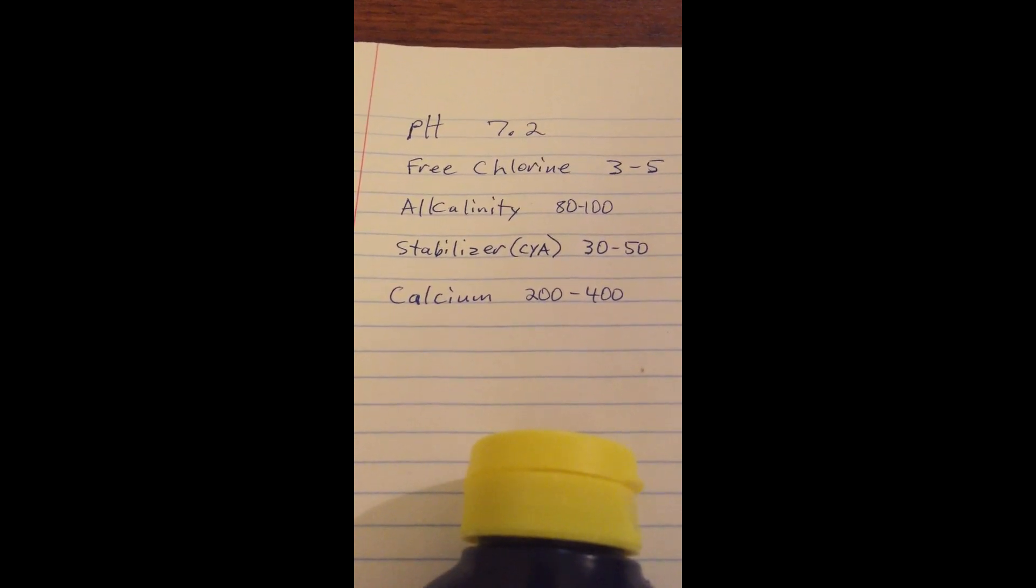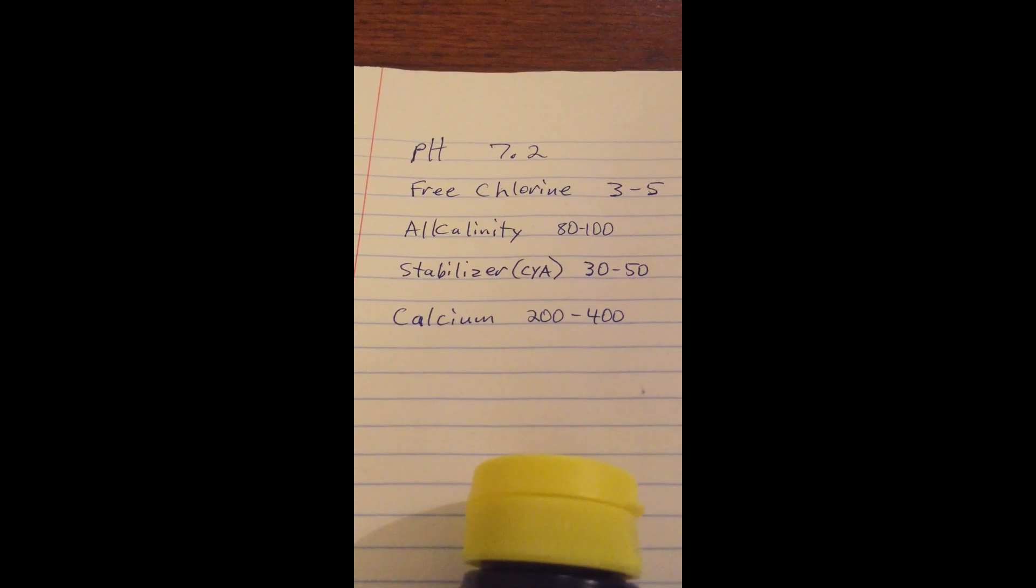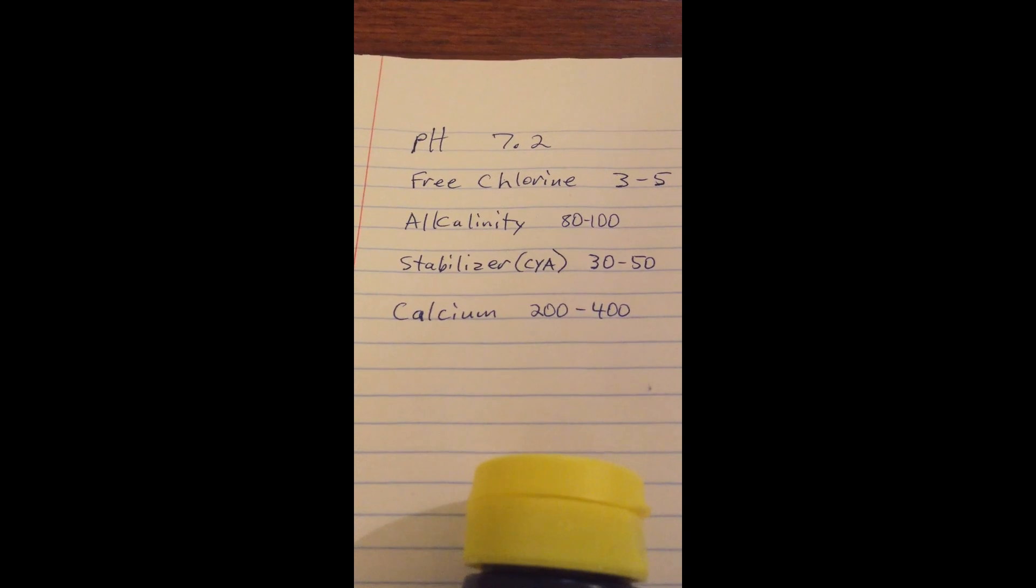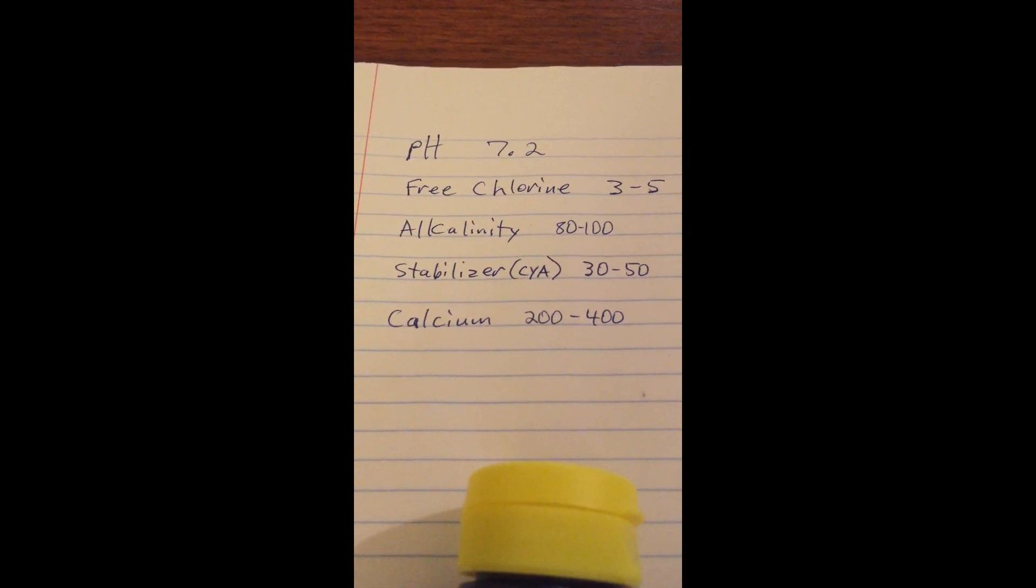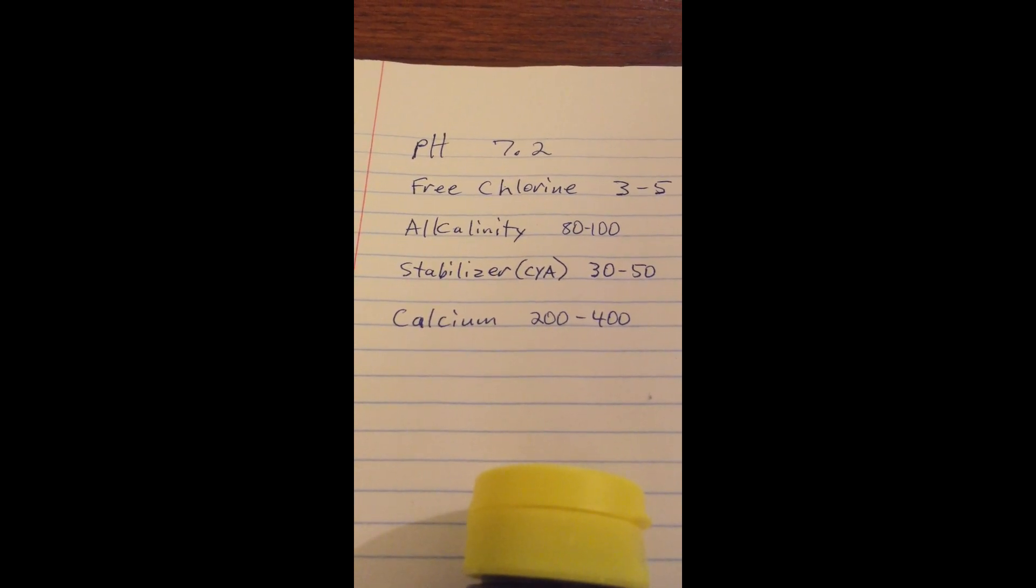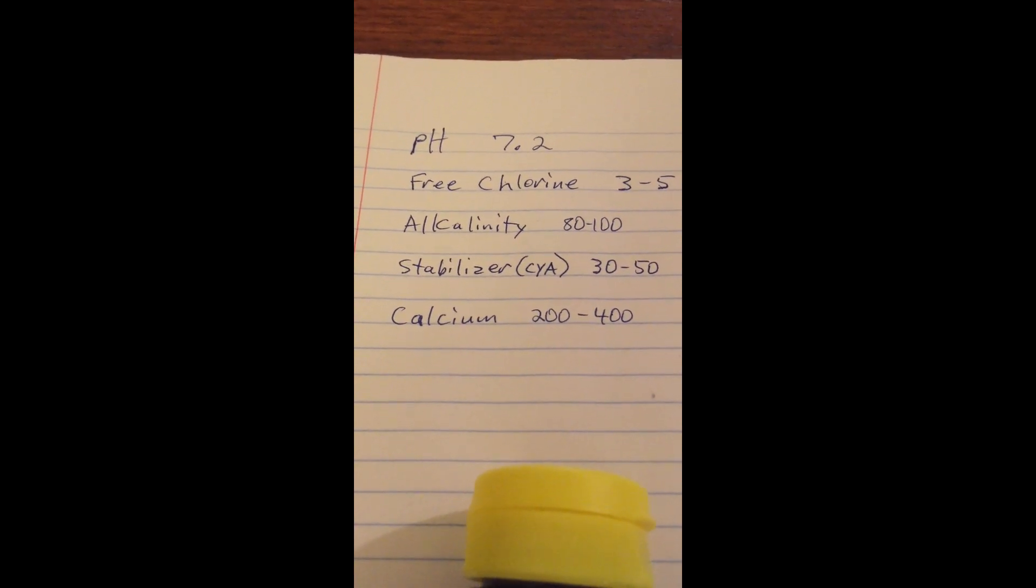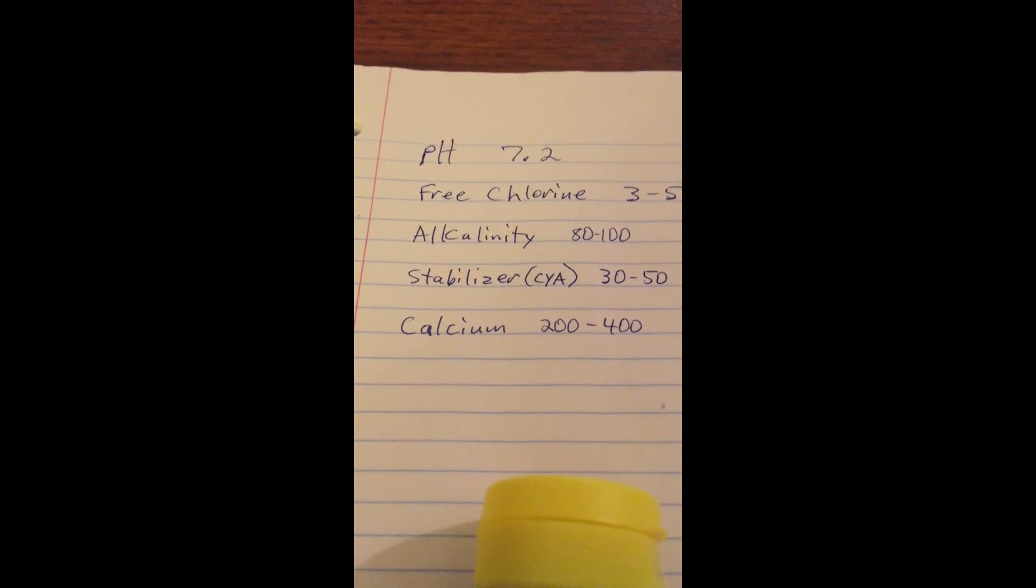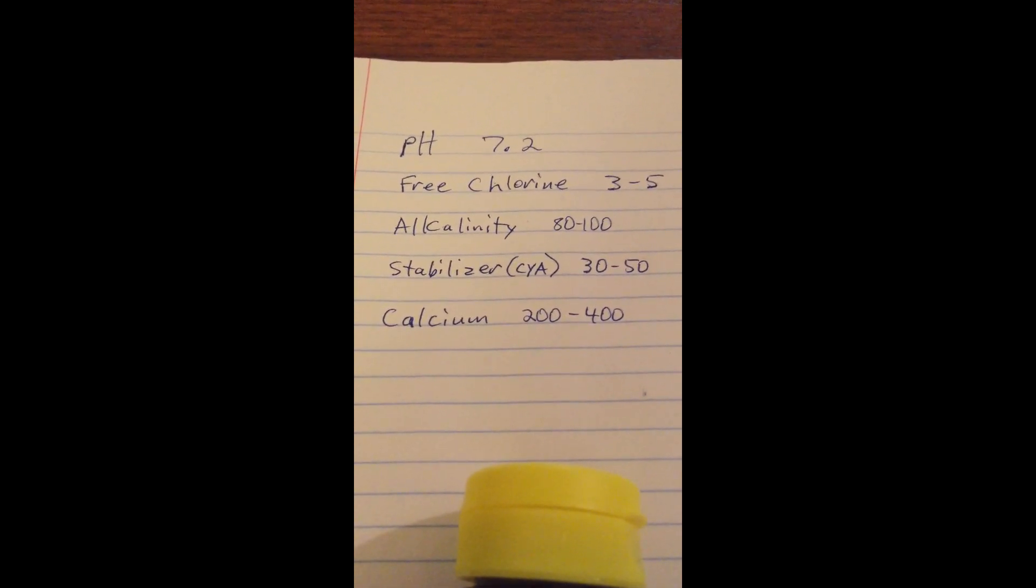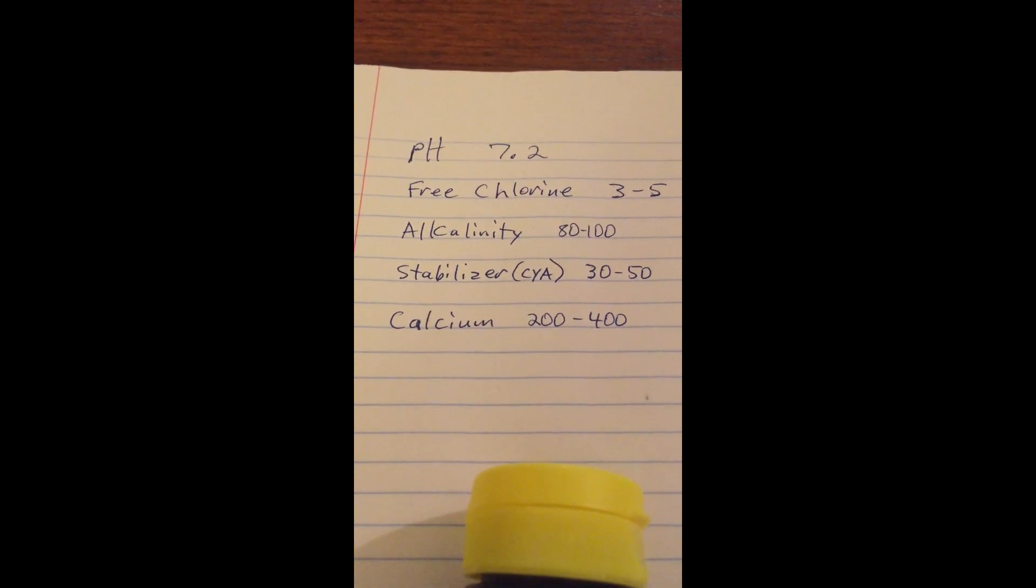This is what calcium does in the water. It helps protect the plaster from the water being out of balance and trying to pull the calcium out of the plaster pool. If you're in a vinyl pool, above ground pool, you do not have to worry about the calcium level because there's not a concern of calcium being drawn out of the vinyl because it can't happen. So you don't really even need to worry about the calcium level in an above ground pool or a vinyl liner pool, just in plaster pools.